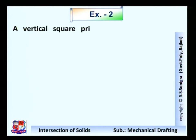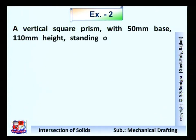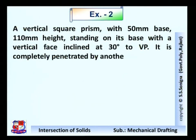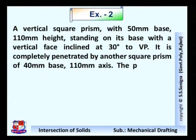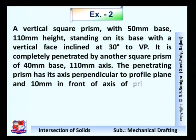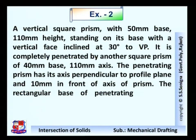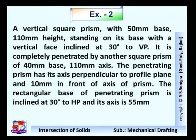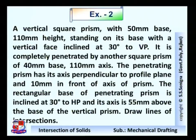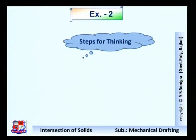The second problem data: a vertical square prism with 50 mm base and 110 mm height, standing on its base with a vertical face inclined at 30 degrees to VP, is completely penetrated by another square prism of 40 mm base and 110 mm axis. The penetrating prism has its axis perpendicular to the profile plane and 10 mm in front of the axis of the standing prism. The rectangular base of the penetrating prism is inclined at 30 degrees to HP and its axis is 55 mm above the base of the vertical prism. Draw lines of intersection.